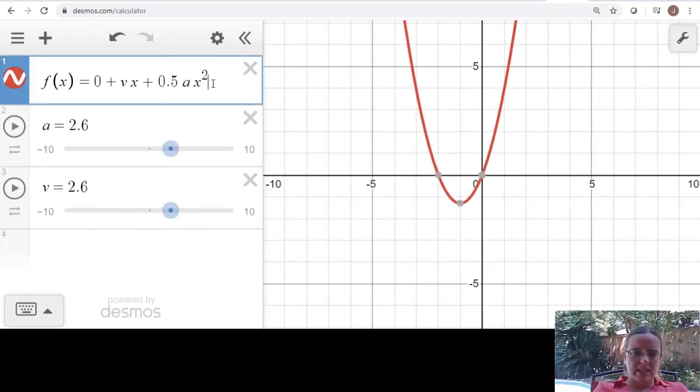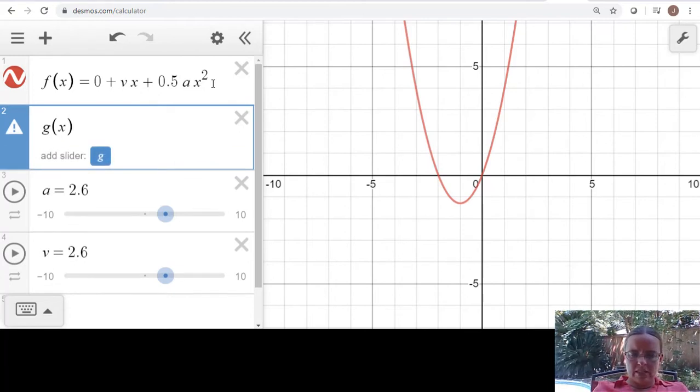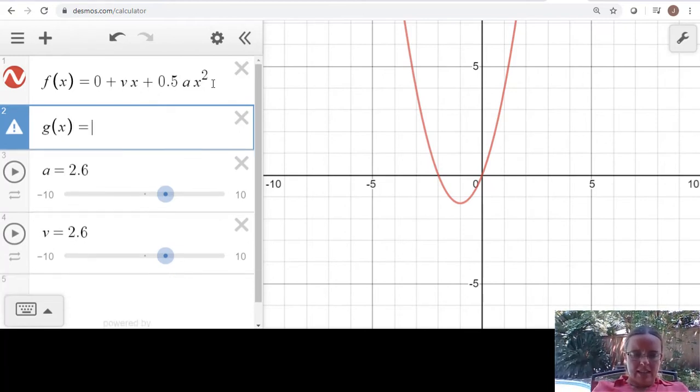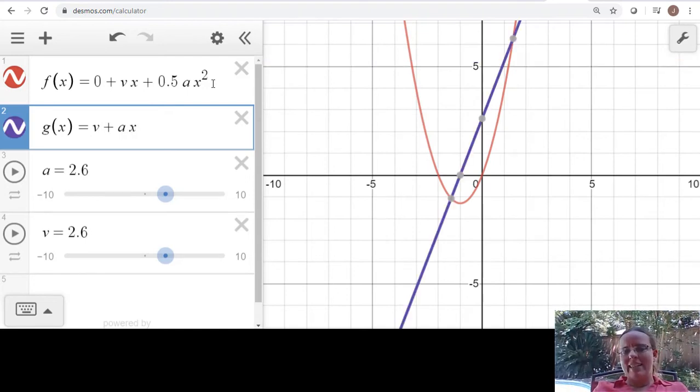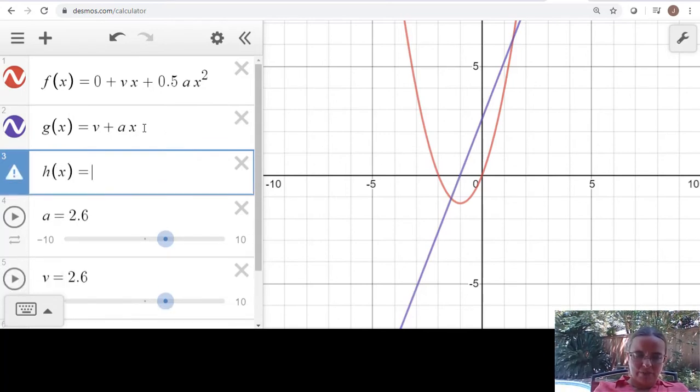I now want another line for our velocity. So I'll create another equation here, and this will be the initial velocity plus a. And again, the confusing part is x is time. So this actual equation is v plus a times t would give me, this is my velocity, and then acceleration is just constant.